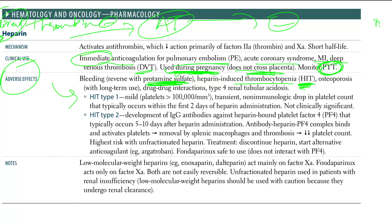HIT has type 1 and type 2. In type 1, there is a mild, non-immunologic drop in platelet count where platelets remain greater than 100k. It is a mild transient drop that typically occurs within the first two days of heparin administration and is not clinically significant because platelets remain above 100k.